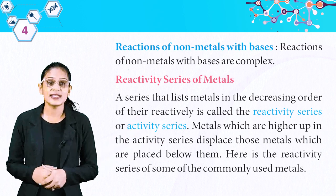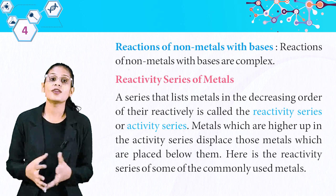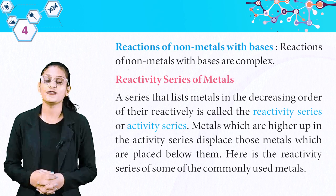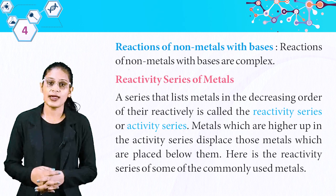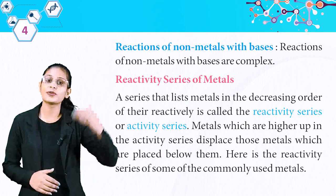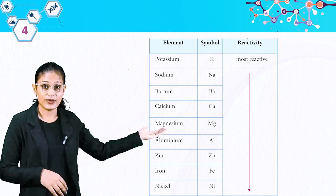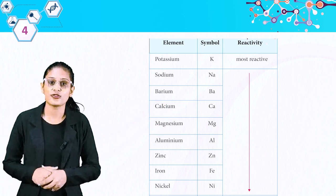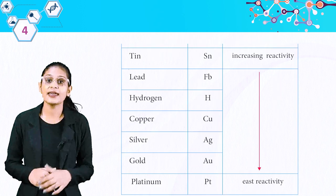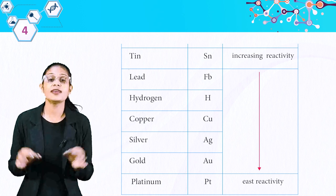Reactivity series of metals: a series that lists metals in the decreasing order of their reactivity is called the reactivity series or activity series. Metals higher up in the activity series displace those metals placed below them. The series from most to least reactive is: Potassium, Sodium, Calcium, Magnesium, Aluminium, Zinc, Iron, Nickel, Tin, Lead, Hydrogen, Copper, Silver, Gold, Platinum — with Platinum being the least reactive.